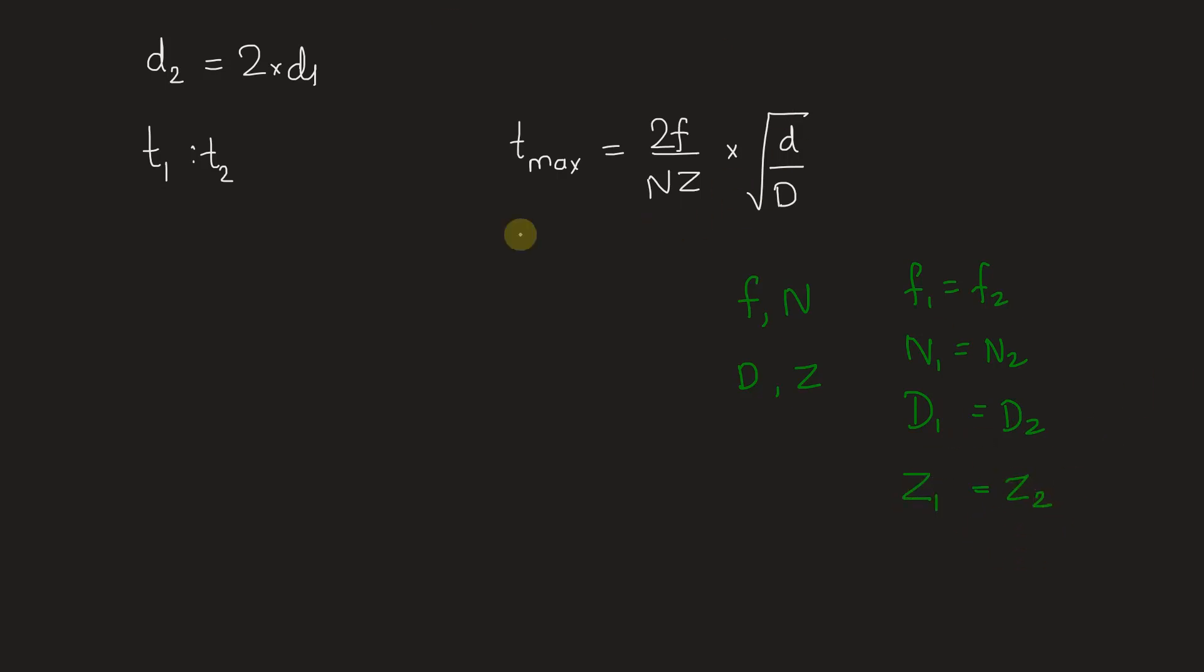Let's substitute. t1 by t2 will be equal to... t1 is directly proportional to square root d as 2 is common in both cases. So t1 by t2 equals square root of d1 by d2.